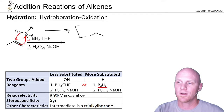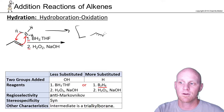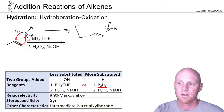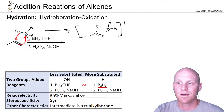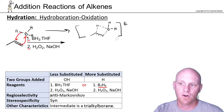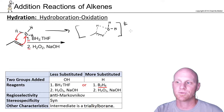Oftentimes students are asked to draw the transition state involved in this step. Every bond being broken or formed is a partial bond in a transition state. The pi bond is being broken; we're forming a bond to boron, which still has two other hydrogens. The bond to its third hydrogen is also being broken, and we're forming a bond between that hydrogen and the carbon. This gives us a lovely four-membered ring-looking structure for the transition state, shown in brackets.